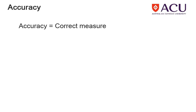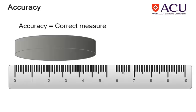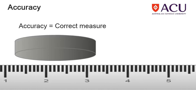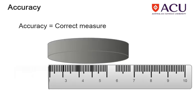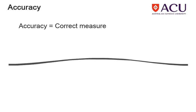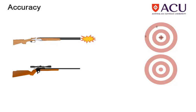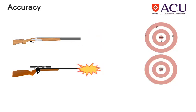Accuracy is the ability to obtain the correct measurement. An accurate ruler is one that correctly measures centimetres when it says it does — the ruler hasn't been stretched, cut off at the end, or warped in the middle. An accurate gun sight is one that can hit a bullseye when the crosshairs say it will.